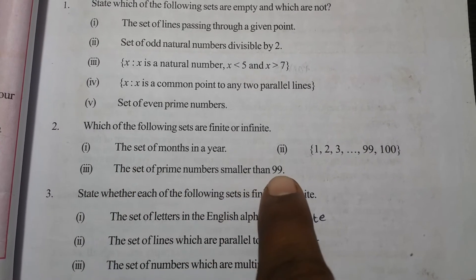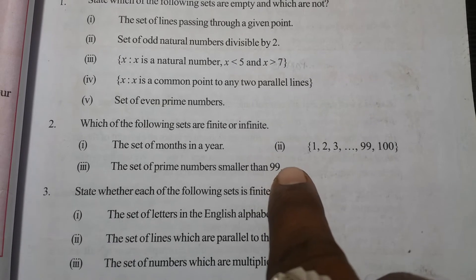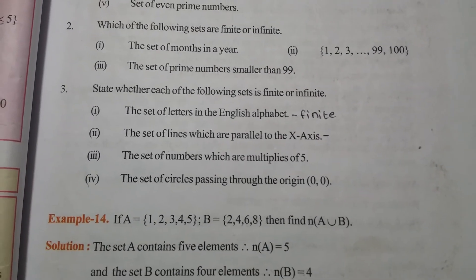Set of prime numbers smaller than 99. This is also a finite set. We can count the number of elements present in the set.